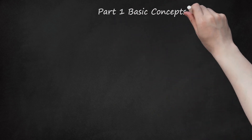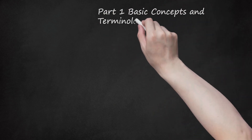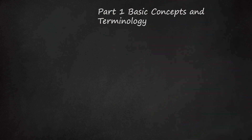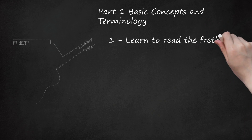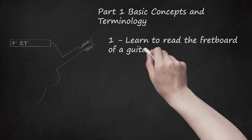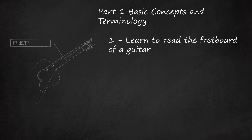Part 1: Basic Concepts and Terminology. Learn to Read the Fretboard of a Guitar. On a guitar, the front of the long, skinny part where you put your fingers is called the fretboard. The raised metal bumps on the fretboard are divided into frets. Scales are formed by playing notes on different patterns of frets, so it's important to be able to identify them.